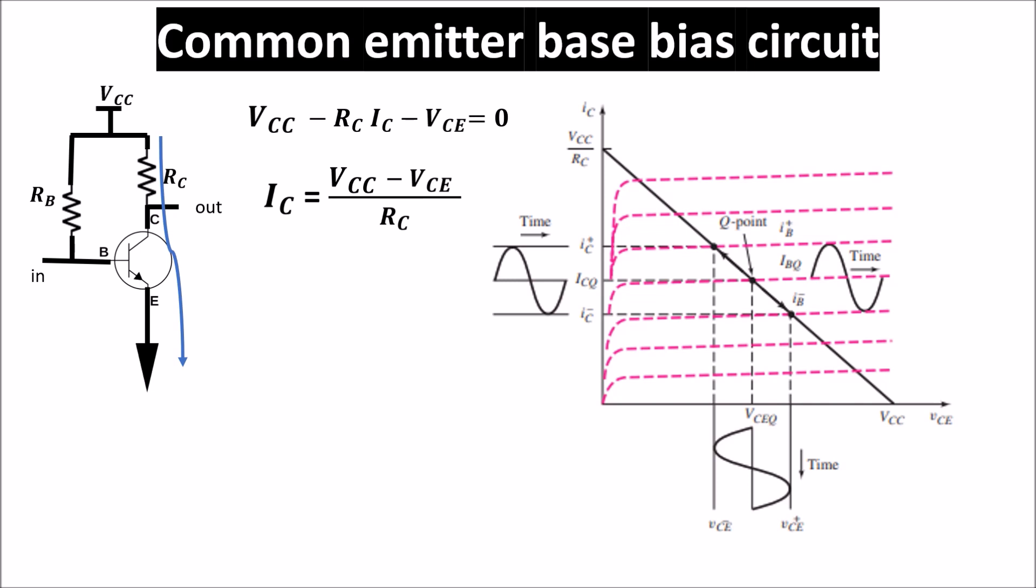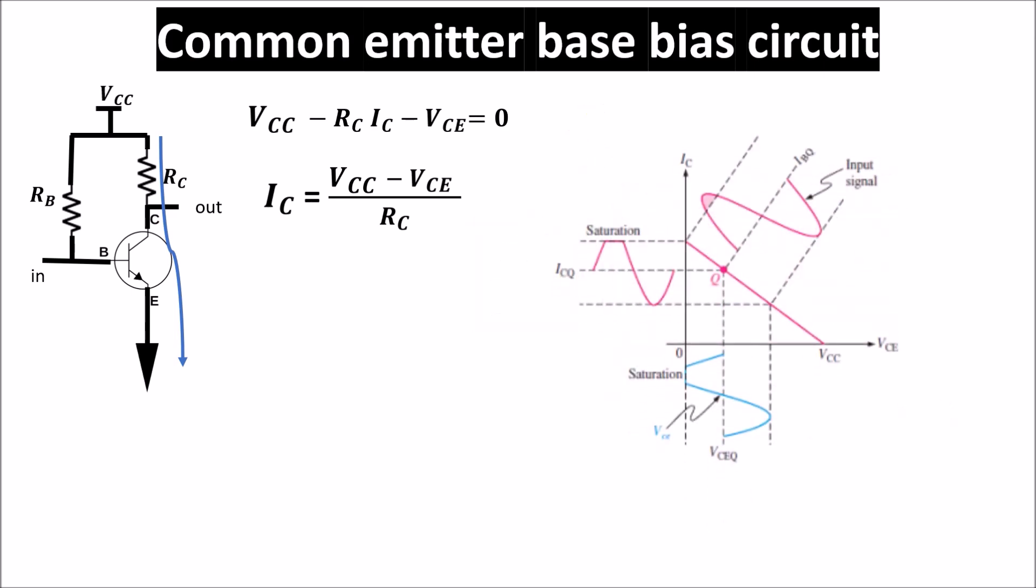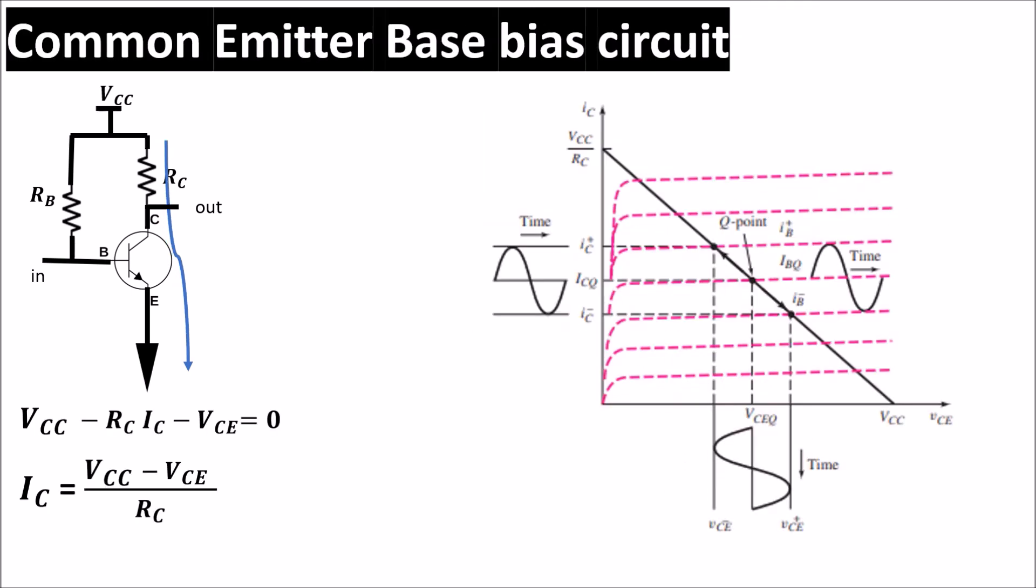From here you can see that a little variation in the input produces a variation on the output which changes a little my quiescent point, approaching a little the saturation area. So it is important to stay far away from the saturation and cutoff region in order to avoid output signal clipping.